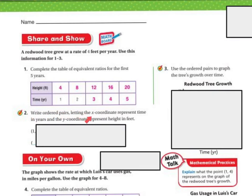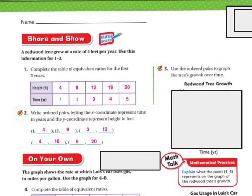Write the ordered pairs letting the x-coordinate represent time in years and the y-coordinate represent height in feet. The ordered pairs are: (1, 4), (2, 8), (3, 12), (4, 16), (5, 20).